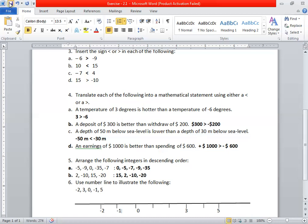A depth of 50 meters below sea level is lower than a depth of 30 meters below sea level. Both are negative - below sea level means both are negative. So minus 50 meters is less than minus 30 meters.